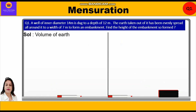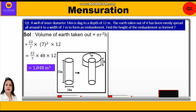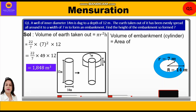Now let's start with the solution. The volume of earth taken out from the well is given by πr²h. Substituting the values: 22/7 × 7² × 12 = 22/7 × 49 × 12 = 1848 m³. The volume of the embankment, which is in the shape of a hollow cylinder, is the area of the base into height, where the base area is the outer area minus the inner area: π(R² − r²) × h.